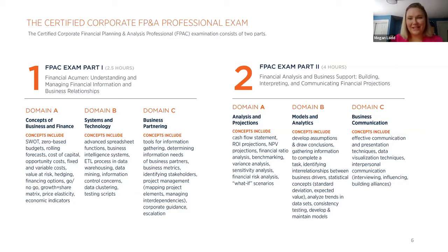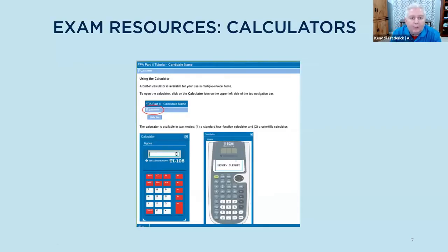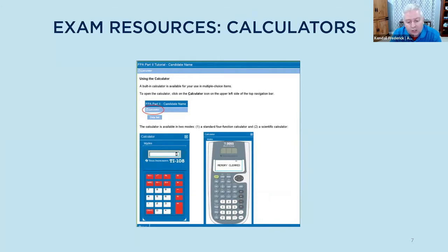Now I'm going to turn it over to Kendall, and he will speak about preparation and test-taking tips. There are a few resources to talk about for the exam. The first is calculators. The testing center will not allow you to bring anything into the testing room other than your ID — all personal effects are placed in a locker. Scratch paper or whiteboard will be provided for calculation work. Within both parts of the exam, you'll have two calculators available: a simple four-function calculator and a scientific calculator similar to a TI-30XS. For most calculations, the four-function calculator will be sufficient; the scientific calculator more easily handles exponents for present value or net present value calculations.